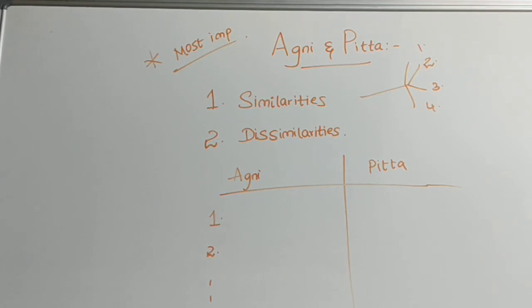While coming to third difference, divasvapna is agni shamaka. If you sleep in the daytime, it diminishes your agni. Divasvapna is pitta vardaka. But, in your body, the pitta dosha will increase.